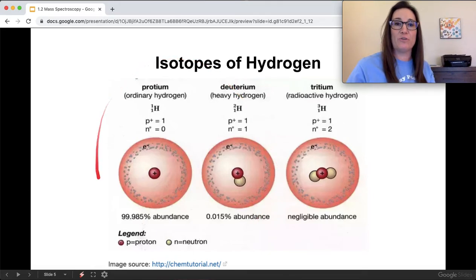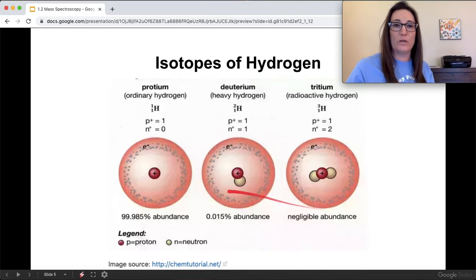The deuterium is a small amount. So when you look on the periodic table, the weighted average of all of this ends up being about 1.008, just a little bit above 1.00, and that's because most of it is proteum or hydrogen, the ordinary hydrogen, with one proton, one electron, and no neutrons. So I'm going to show you how you actually calculate it if you have something that isn't like hydrogen, where it's predominantly one type of isotope.